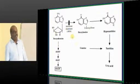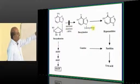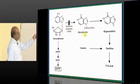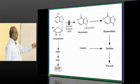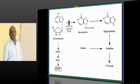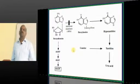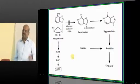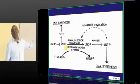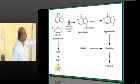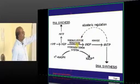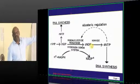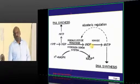Once more: adenosine deaminase is important to convert adenosine to deoxyinosine, which converts into hypoxanthine to xanthine to uric acid. If deoxyinosine is not formed, adenosine converts to AMP to ADP to dATP. Excess dATP will inhibit ribonucleotide reductase, which prevents deoxyribonucleotides from forming, and that affects DNA formation.